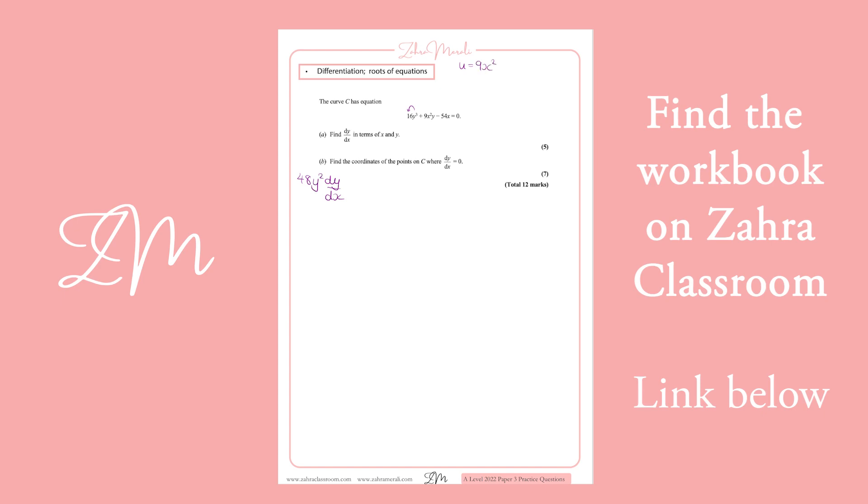The next one's a product, so we've got u = 9x² and v = y. Differentiating u gives us 18x. Differentiating v gives us 1·dy/dx because there's a y there, and then we do those two and those two.